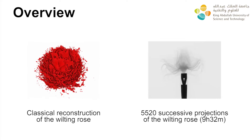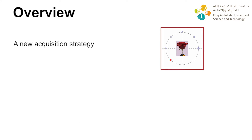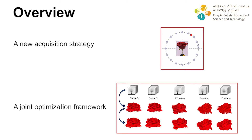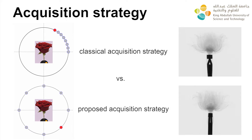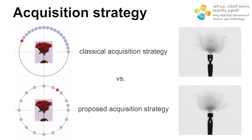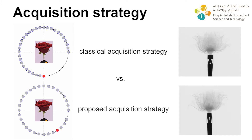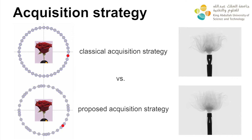We propose a non-parametric space-time tomography method based on a new acquisition strategy and a multi-scale joint optimization framework that alternates between estimating a deformation field and updating a density volume. Instead of using a classical scanning strategy where projections are taken in a linear sequence, we propose a new acquisition strategy where the viewing angles are based on a low-discrepancy sequence. This strategy allows for a better distribution of the projection angles over time.